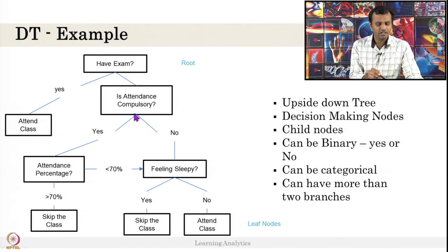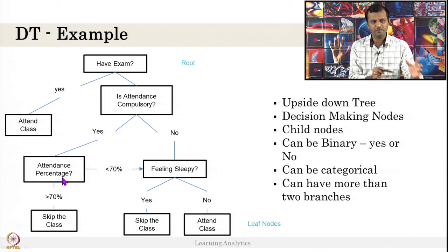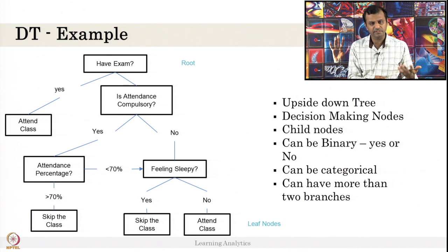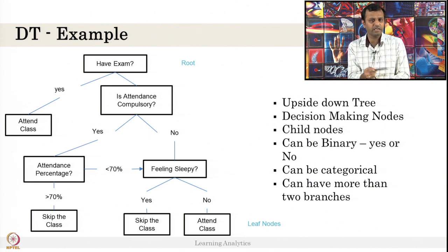If he has no exam, that is no. And it makes sure this particular course, my attendance is compulsory. If it is compulsory, then the next question comes - if my attendance is compulsory, do they have a record percentage of attendance? If I have greater than 70 percentage, then I can skip the class. The student might think, I do not want to attend the class. There is no exam today and attendance is compulsory in this course, but I have already more than 70 percentage, so I can skip the class.